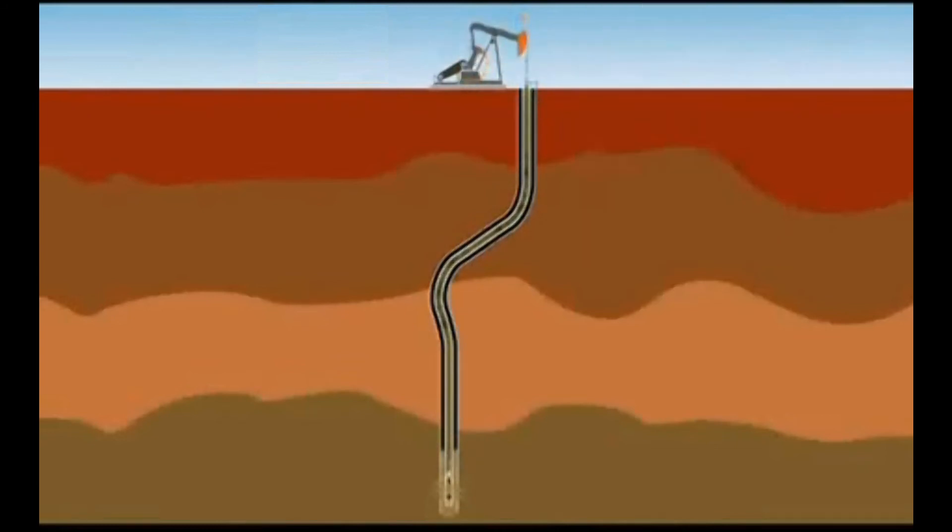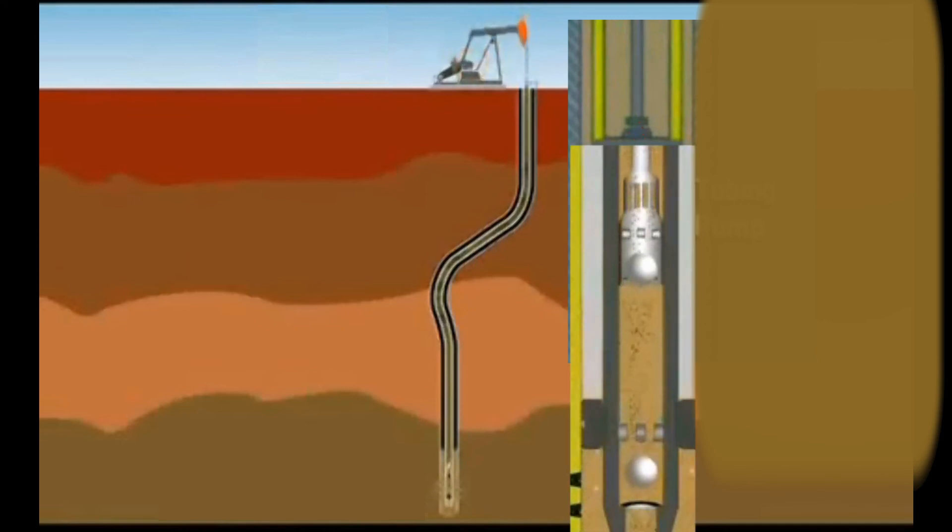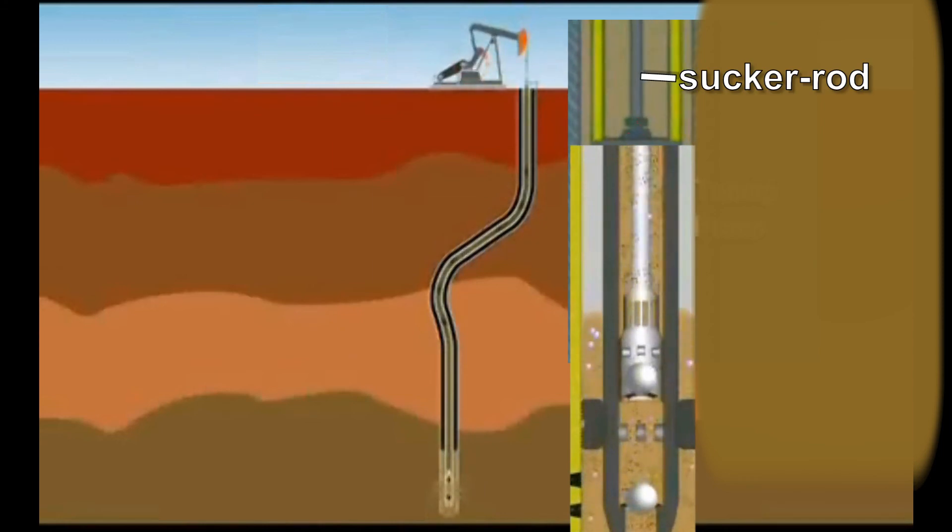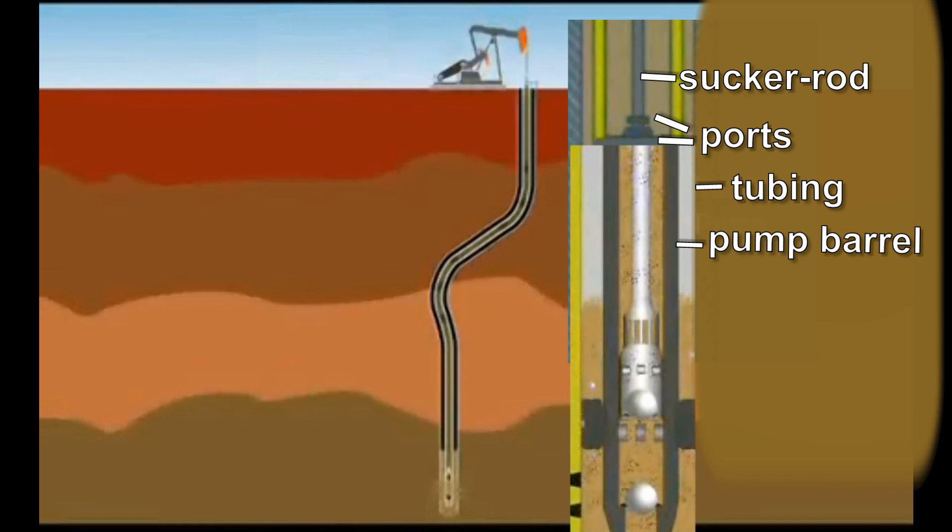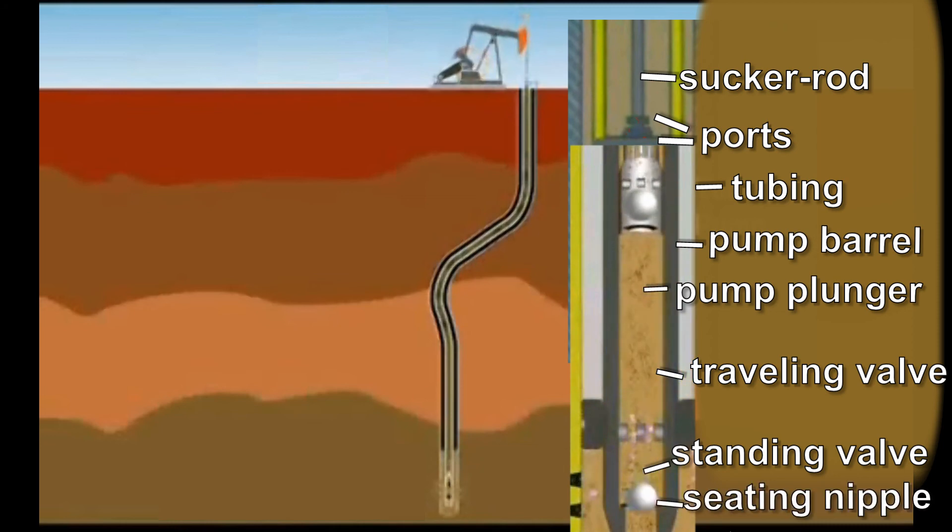This movement is contingent on the pump having enough energy to push the column of fluid to the surface. In this illustration, you can see the components inside the pump. You have the sucker rod, the ports, the tubing, the pump barrel, the pump plunger, the traveling valve, the standing valve, and the seating nipple.